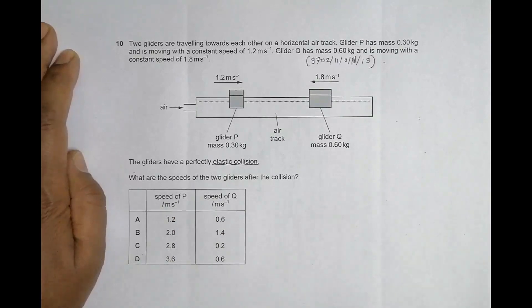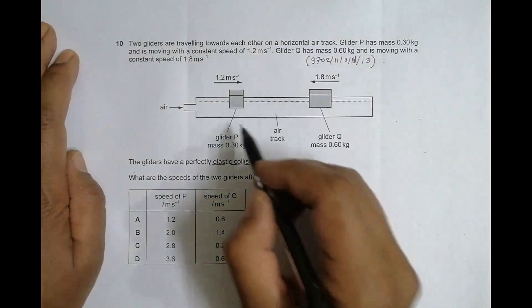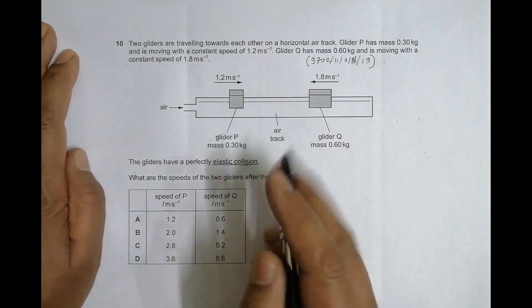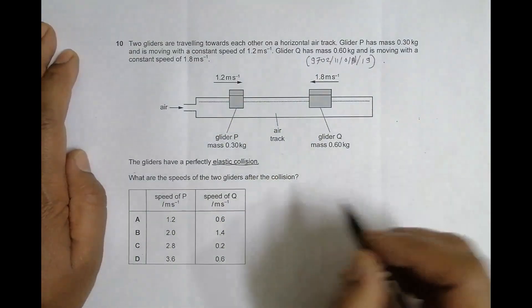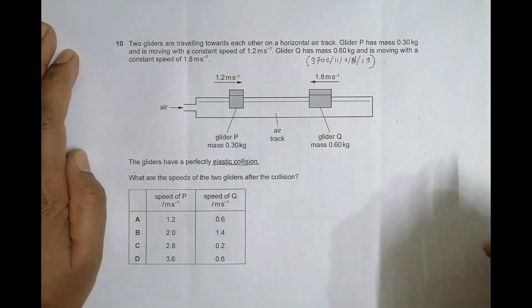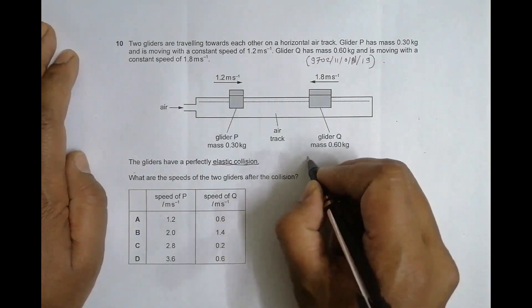So both choices C and D were correct with that approach. That's why I decided to use the whole formula, the one we derive in our notes. When two bodies collide in elastic collision, the final velocities of P and Q are given like this.